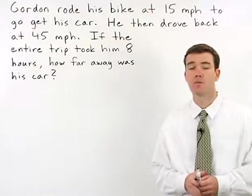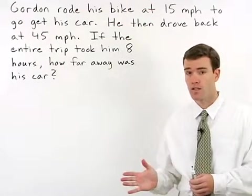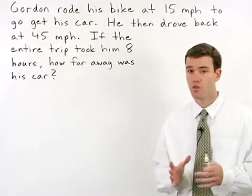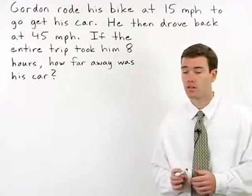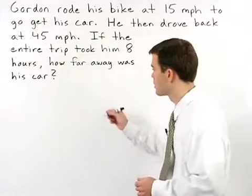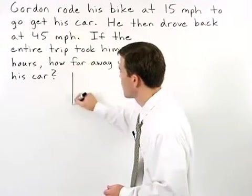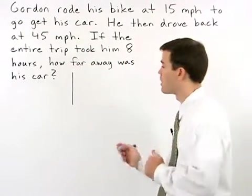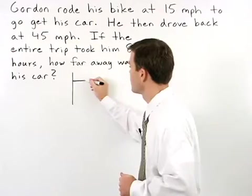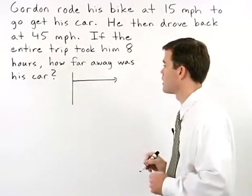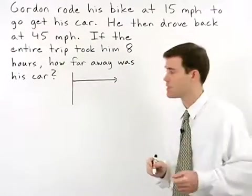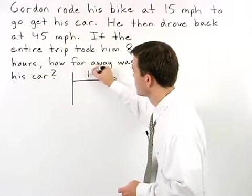Let's start by setting up a diagram, just like we did in the last section, so that we can visualize what's going on. First, since Gordon rides his bike to go get his car, let's start by making an arrow going to the right to represent the distance that he bikes, or DB.